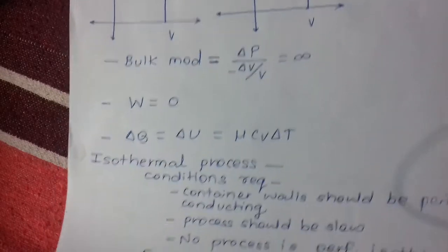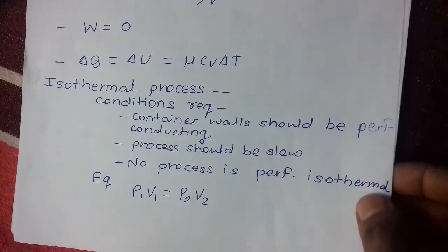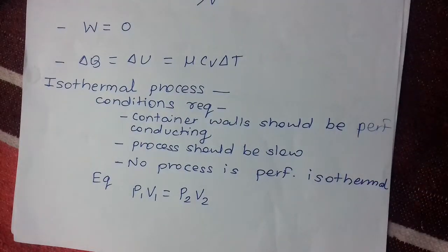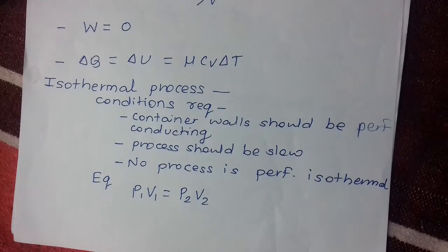Isothermal process: conditions required are that container walls should be perfectly conducting, and the process should be slow to allow transfer of heat. No process is perfectly isothermal.